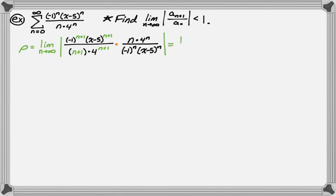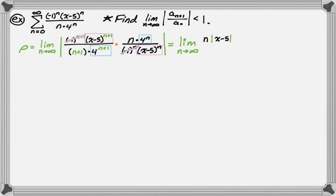So we have the limit as n approaches infinity. Because of the absolute value, we can cancel out the negative 1 to the n and negative 1 to the n+1 terms — the absolute value gets rid of those. We have x minus 5 to the n+1 over x minus 5 to the n, which simplifies, and 4 to the n over 4 to the n+1, which also simplifies. Since n is going to infinity it's positive, so we factor it out. The x minus 5 terms reduce to just x minus 5, but we keep the absolute value since x could be positive or negative.